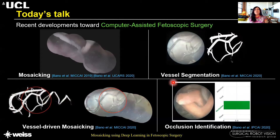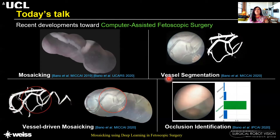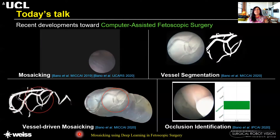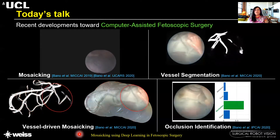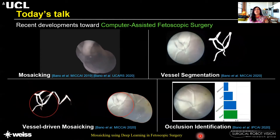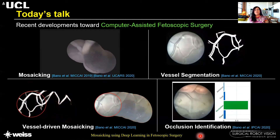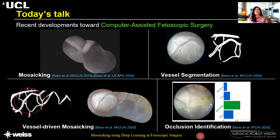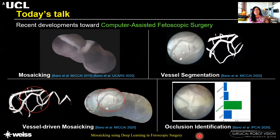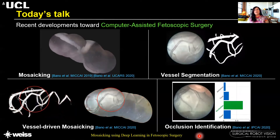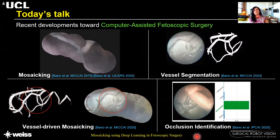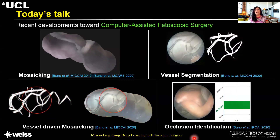I'll also be talking about recent work on vessel segmentation and vessel-driven mosaicing accepted for publication at MICCAI 2020, and then moving on to an occlusion identification approach, which is very useful for identifying sequences with a clear view that can drive our mosaicing algorithms.